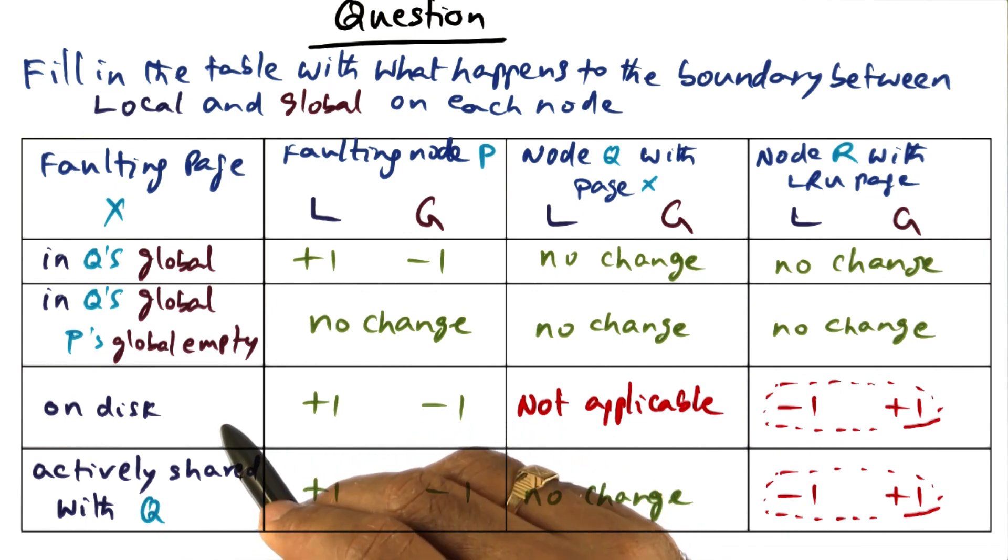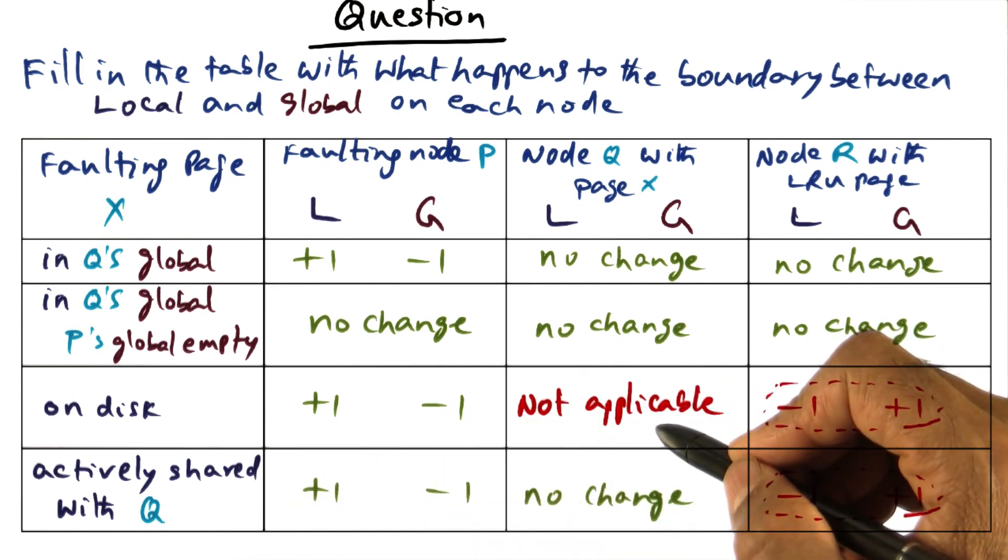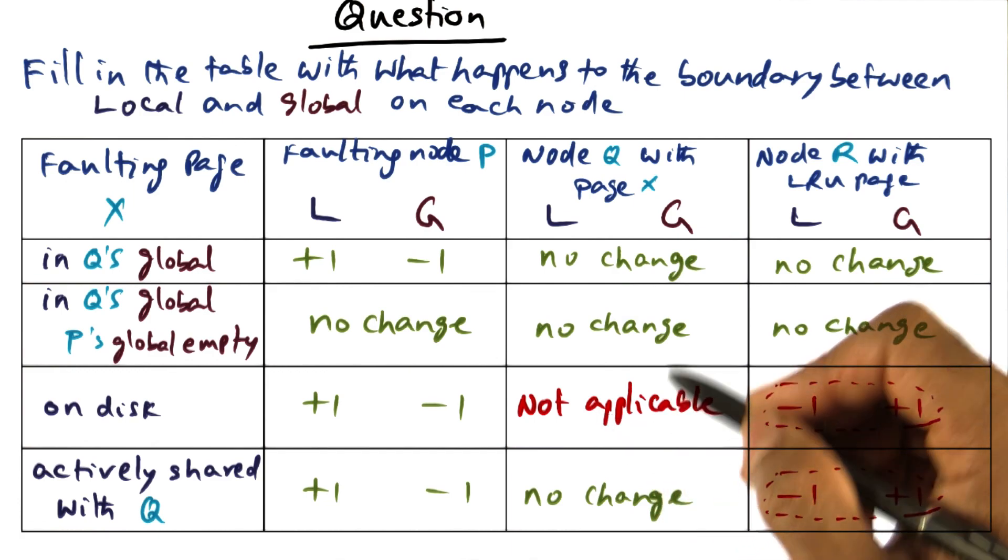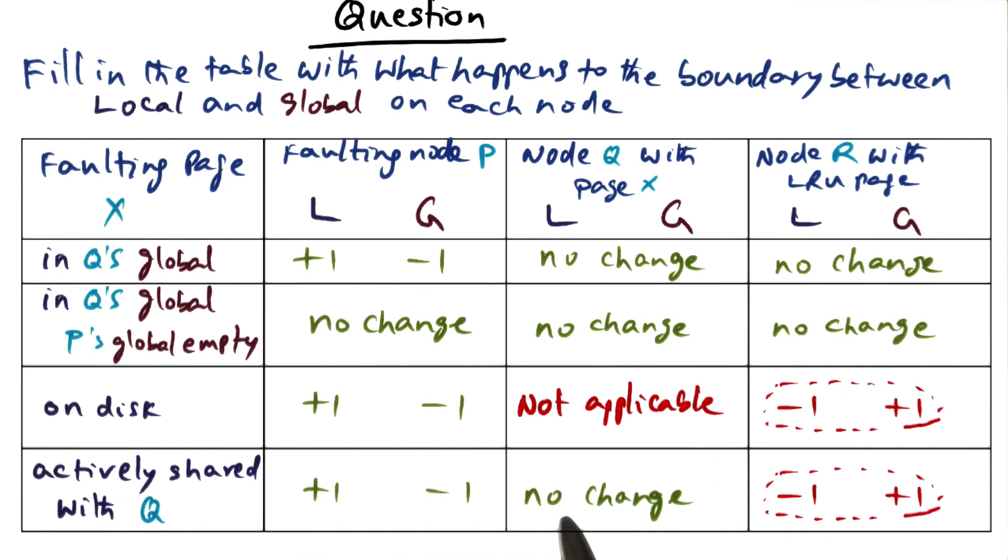The third case is where it is on the disk and therefore this is immaterial. Because it's not in any cluster memory right now, it is on the disk, so it's not applicable.